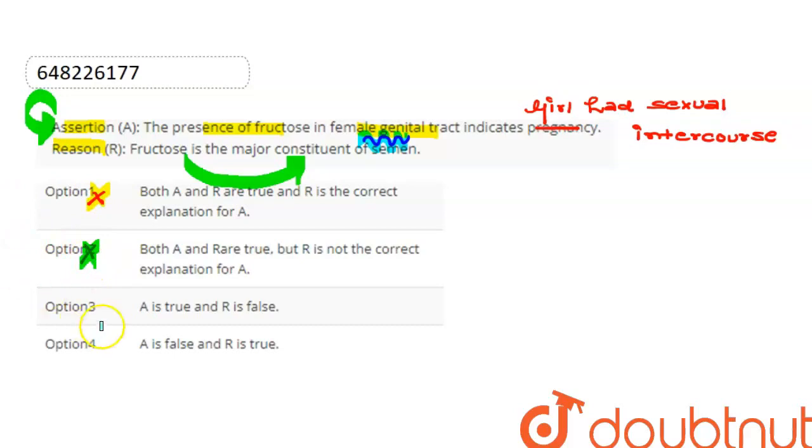Option 3: Assertion is true and reason is false - this option is wrong. Option 4: Assertion is false and reason is true - this is the appropriate answer. All remaining options are wrong.